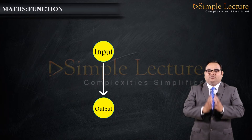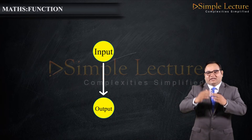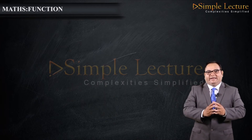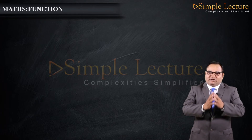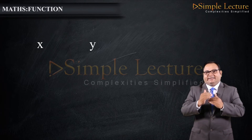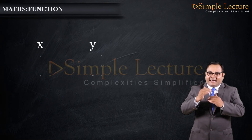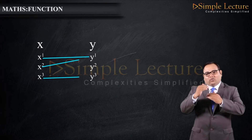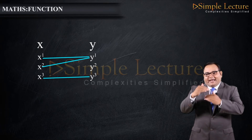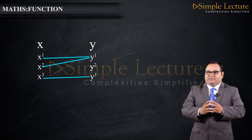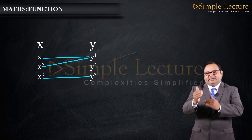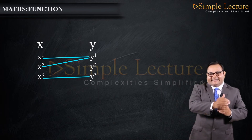This is the basic definition of a function. Mathematically, f is said to be a function from X to Y if each element in set X has its image in Y. However, there may be some elements in set Y which do not have any pre-image in set X.